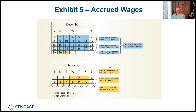The total wages expense for December includes $950 for the first two weeks, $1,200 for the second two weeks, and $250 accrued — unpaid — for December 30th and 31st, totaling $2,400. The $250 will be paid later on January 10th. The adjusting entry on December 31st: debit wages expense and credit wages payable for $250. Wages expense is an income statement account; wages payable is a balance sheet liability account.